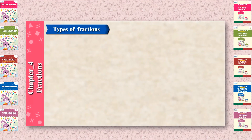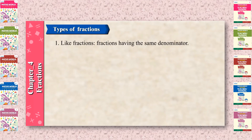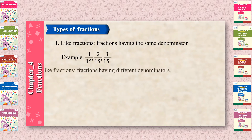Types of Fractions. Like fractions: fractions having the same denominator. Example: 1 upon 15, 2 upon 15, 3 upon 15.